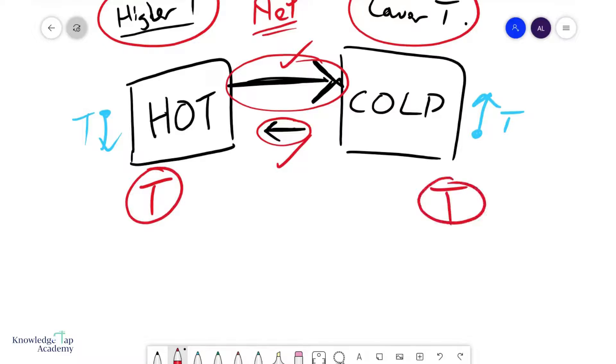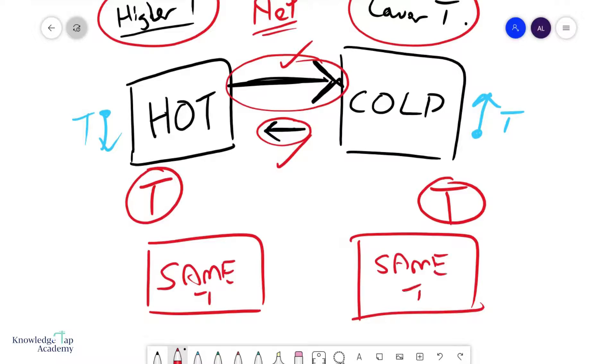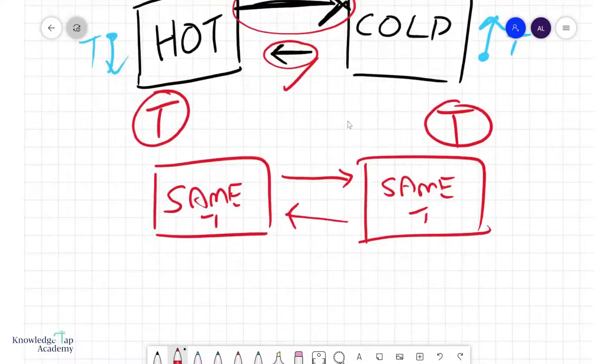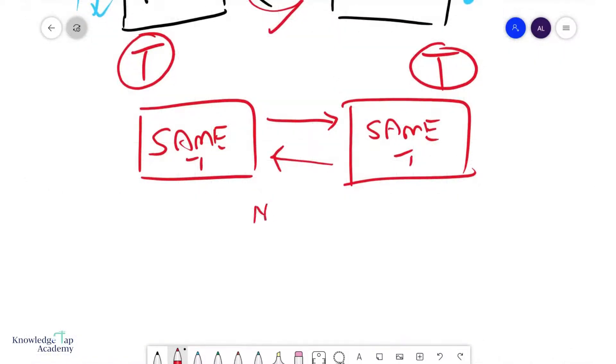And when this happens, they are no longer hot and cold, same temperature, same temperature, and then the flow of heat both ways is exactly the same, and so the net flow of heat is zero. And this is of course what we like to call thermal equilibrium. All objects in thermal contact will eventually reach thermal equilibrium.